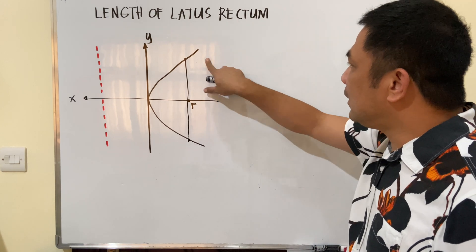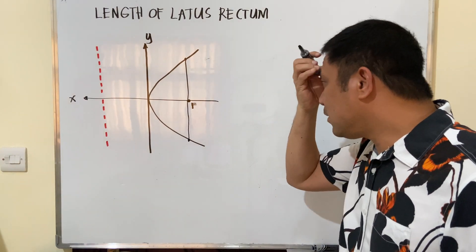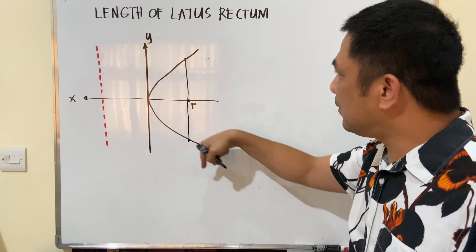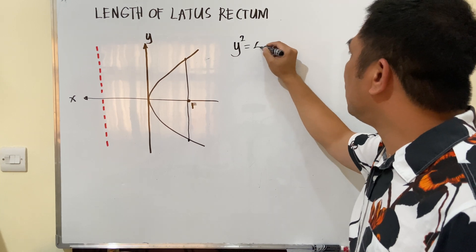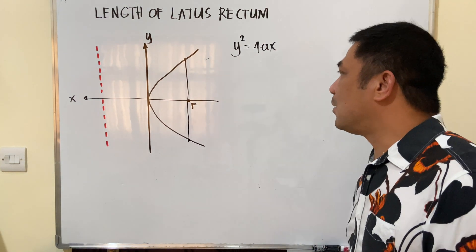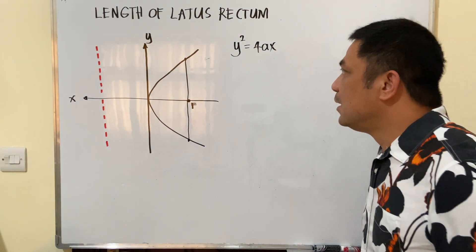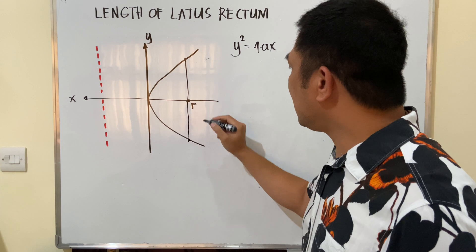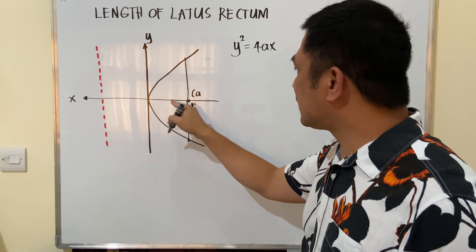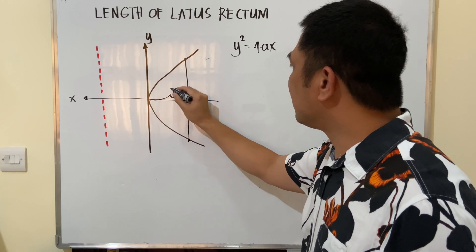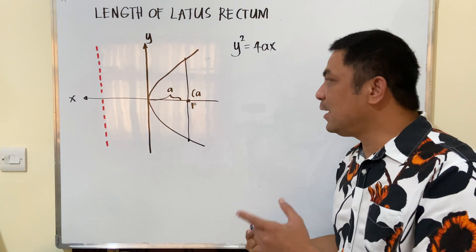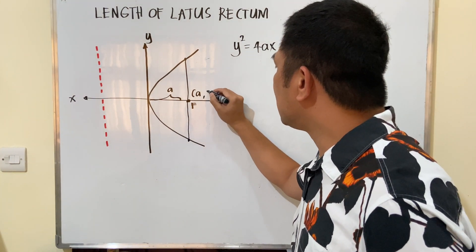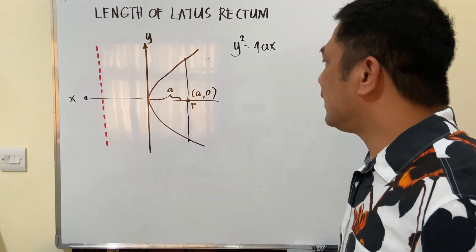So how do we find the length of the latus rectum? Let's use the standard form of the parabola: y² = 4ax. This is the graph of our parabola with vertex at the origin (0, 0). Our focus is located at (a, 0), since the distance from vertex to focus is a.